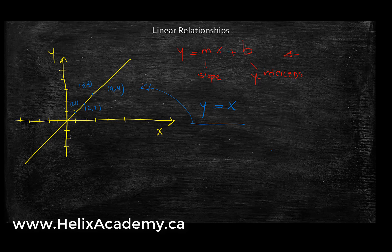What does a map mean? Whatever I give x, my y is equal to that value. So if I give x a 0, my y is going to be 0. If I give my x a 1, my y is going to be 1. If I give x a 2, my y is going to be 2. So if I substitute x with 1, for example, y is going to be equal to 1.